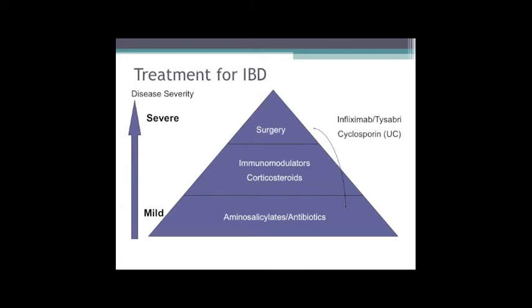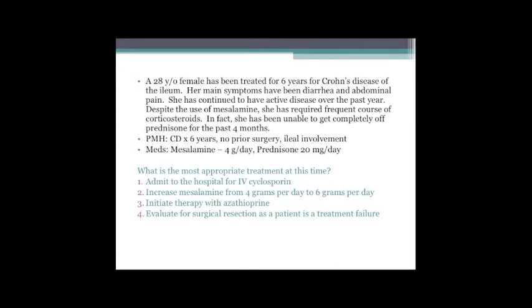Tysabri is a fourth- or fifth-line medicine for Crohn's disease and is also used in MS. It's very restricted in use because of its complication - PML. PML is devastating; most PML cases with Tysabri have been described in MS patients, but UNC has the distinction of having the second Crohn's patient to develop PML. Most patients who get PML die.